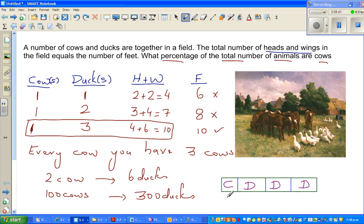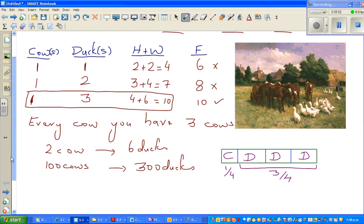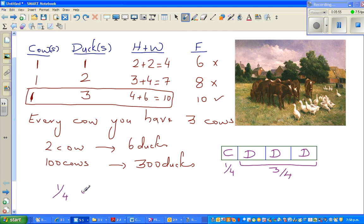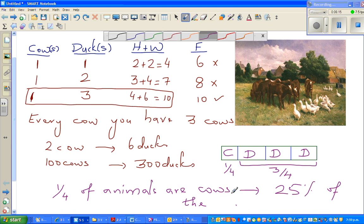If you see, this is one quarter. And this cow represents one quarter. And this represents how many quarters? Three quarters. So the answer is one quarter of the animals are cows. This means 25% of the animals are cows.